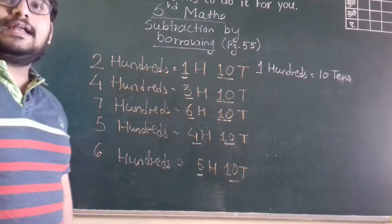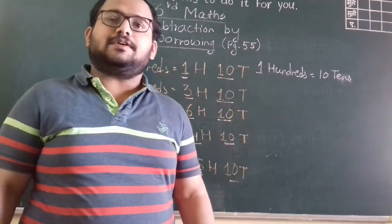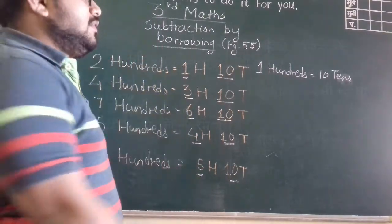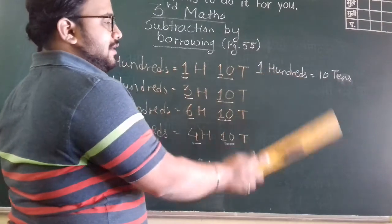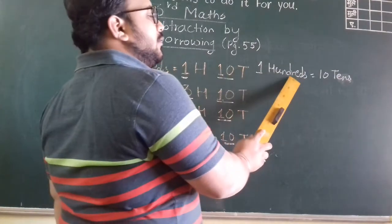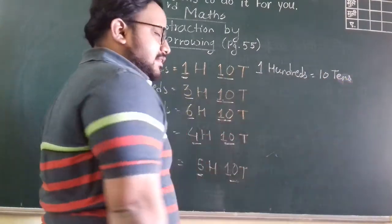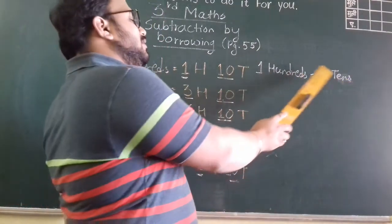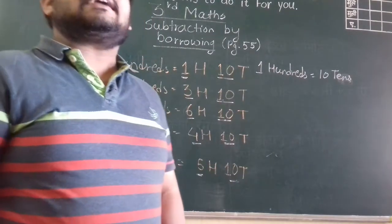Now basic, we have studied about tens and hundreds in previous videos. Now see, one hundred means how many tens? Ten tens. All of you know it, no? One hundred means ten tens. You have studied it in previous videos and also in second standard.